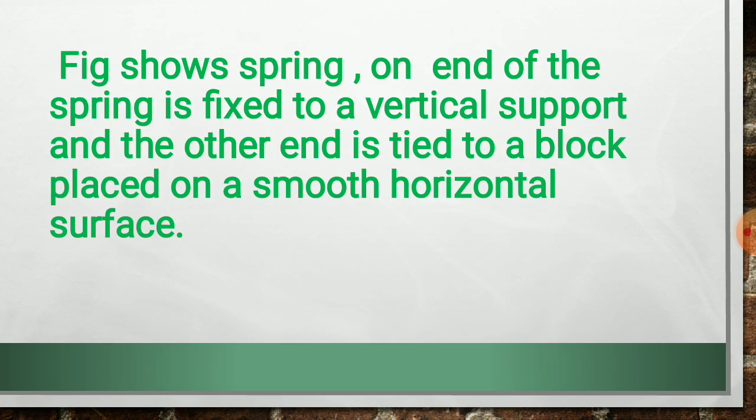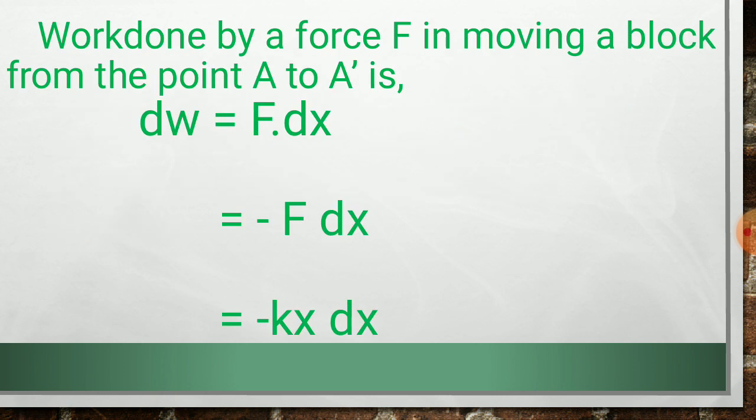Now when the block moves from A to A' through the distance dx, then the work done by force in moving a block from the point A to A' is dw is equal to F into dx. But here, F and displacement both are oppositely directed. Therefore, it will be represented by the negative sign. But F is equal to kx. Therefore, the work done dw is equal to minus kx dx.